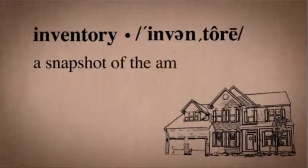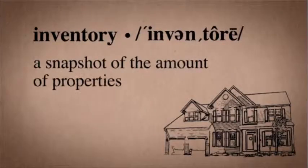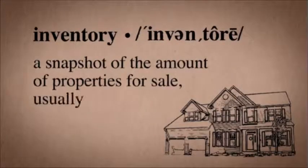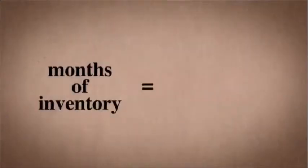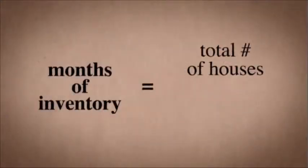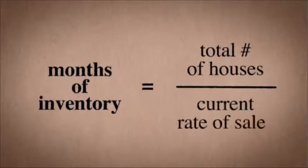Inventory is a snapshot of the amount of properties for sale. It's usually measured in terms of months. The number of months of inventory is the total number of houses for sale divided by the current rate of sales.